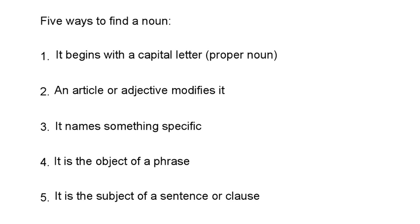There are about five different strategies for finding a noun in a sentence. You won't be able to use all five for any given noun — sometimes a noun may work with more than one. These are simply guidelines to help you find a noun. The first one, and probably the easiest, is beginning with a capital letter — these are proper nouns. The second: an adjective or an article modifies it. Third, it names something specific. Fourth, it is the object of a phrase. And fifth, it is the subject of a sentence or a clause — a clause being something with one complete thought.